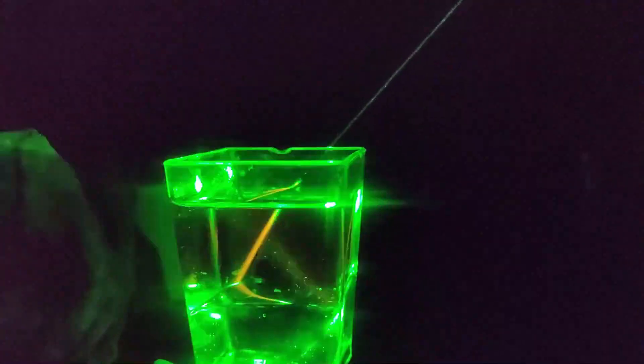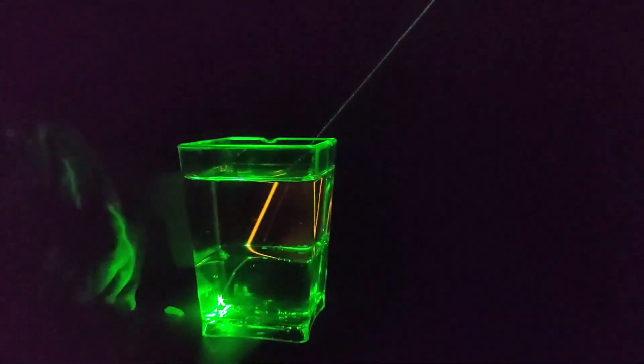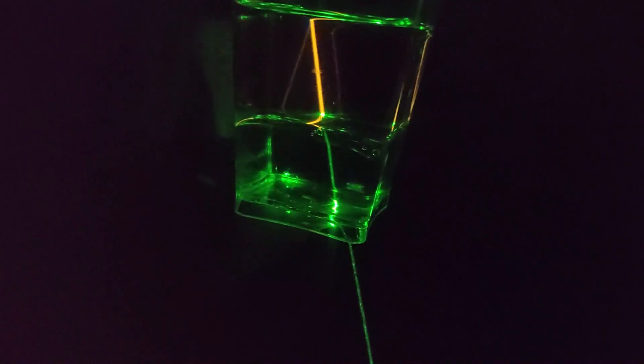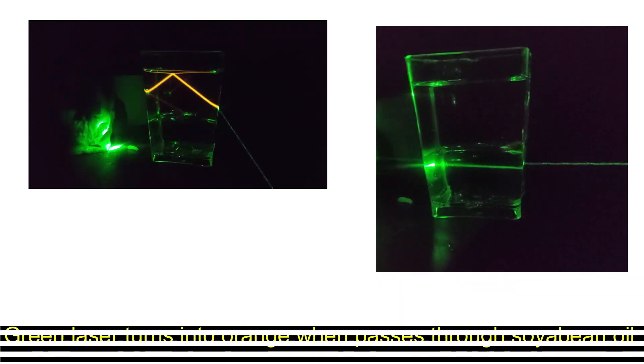So I am ready with my laser light and my density column. Let's start. Just a second. What I observe here is that when green laser light is passing through the oil it turns into orange.